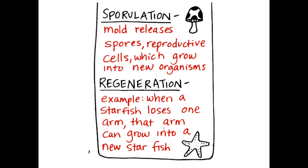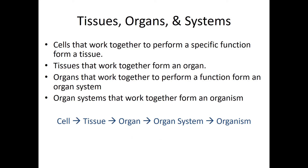Here are two other examples of asexual reproduction. If you've ever kicked over a mushroom and noticed a powder going everywhere, those are spores. Each spore has the possibility of becoming another mushroom if conditions are right, but it only has DNA from that one parent mushroom — so there is no genetic variation. Another example is regeneration in sea stars: if you cut off an arm of a sea star and it still has a little bit of the center part, it will actually grow into a whole new sea star with the same DNA as the original.